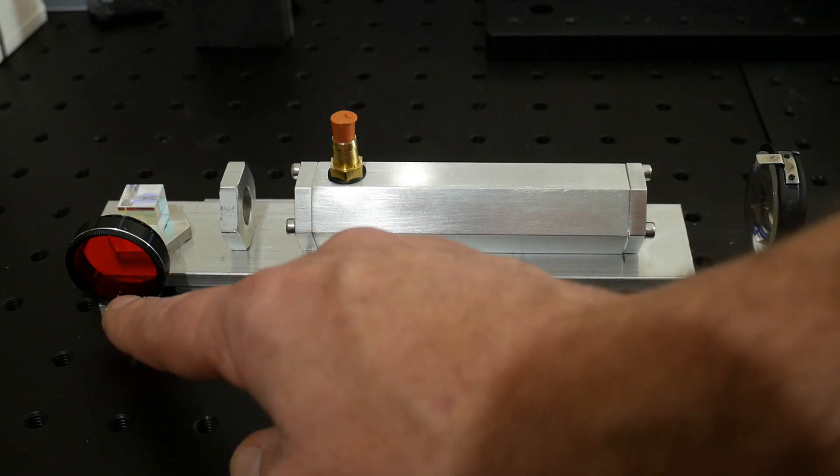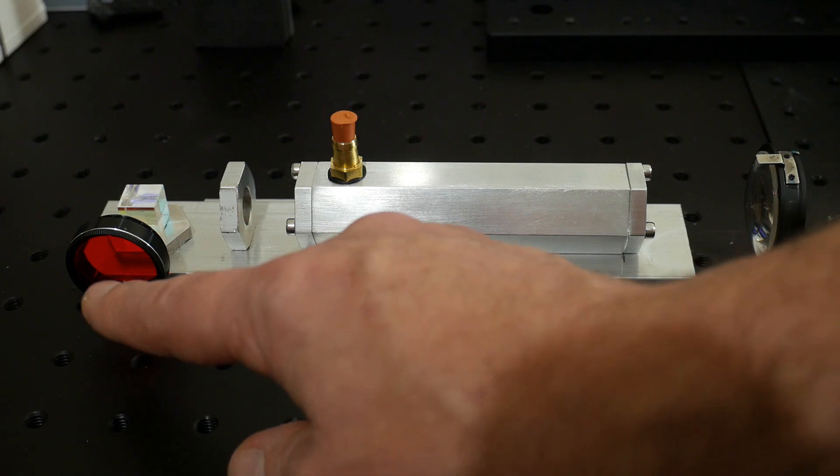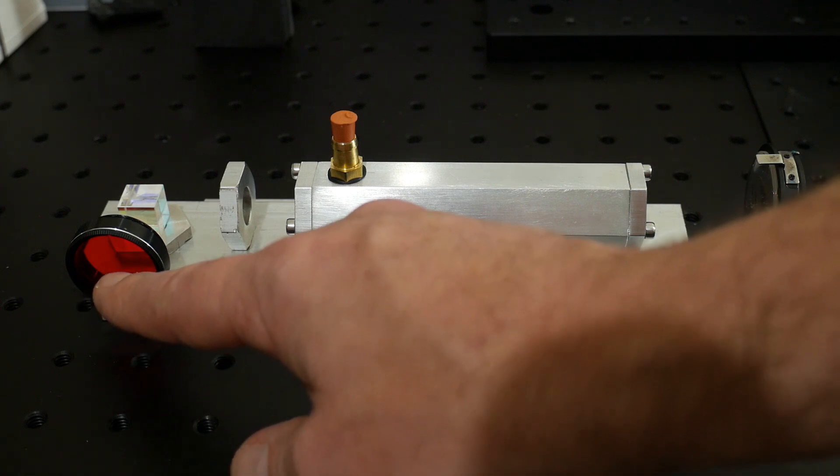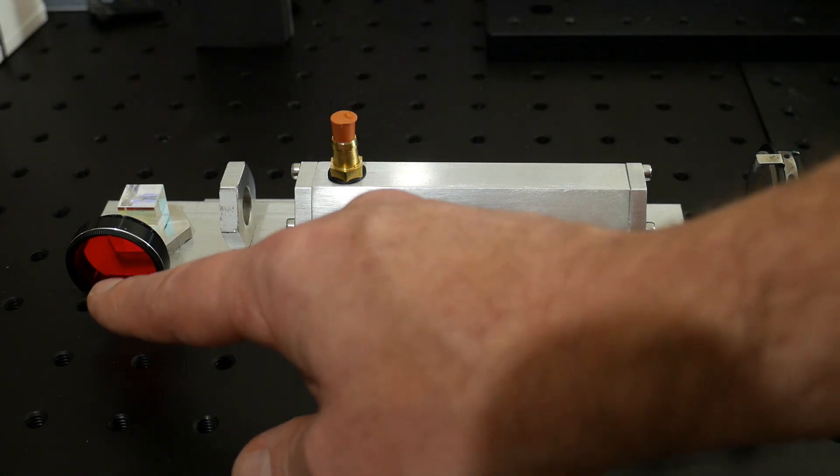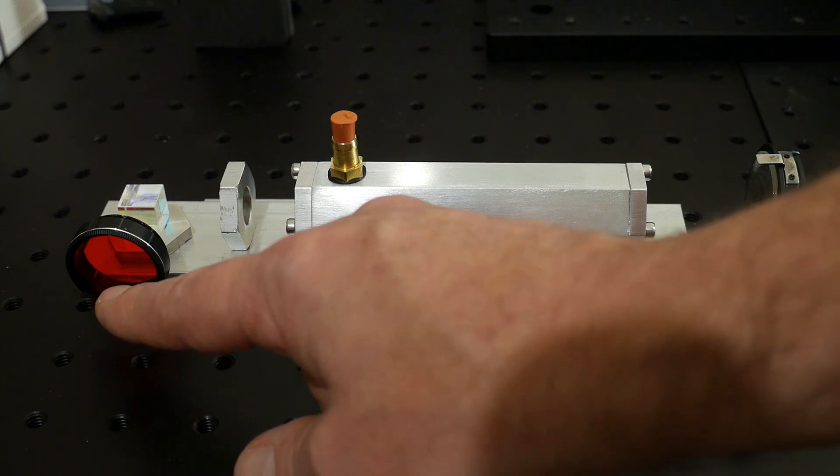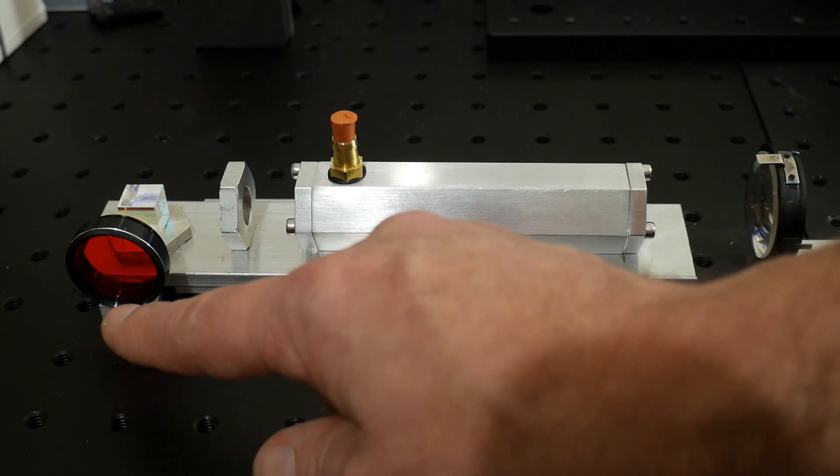In front of the output I have a long pass filter this is just to catch any green that might have been reflected from the dichroic beam splitter and the camera will see the green far more easily than it will see red light and I don't want to wash it out when we try and film this.